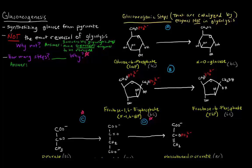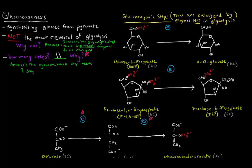So how many steps is gluconeogenesis? Glycolysis was 10 steps, but gluconeogenesis is actually 11 steps. The reason why is because the pyruvate kinase step from glycolysis needs two steps to be reversed. All of the steps from glycolysis can be reversed in one step except the pyruvate kinase step — it needs two steps. That extra step is why gluconeogenesis is 11 reactions long instead of 10.